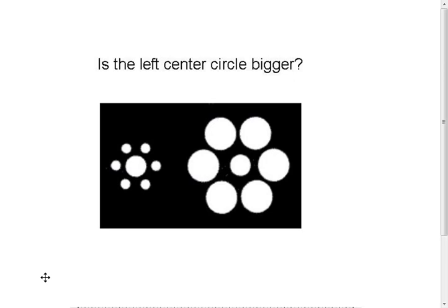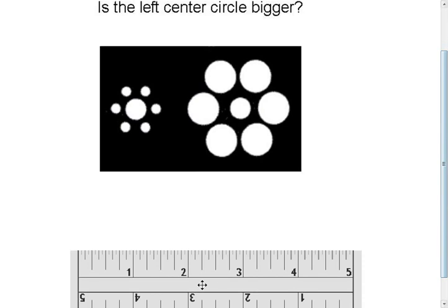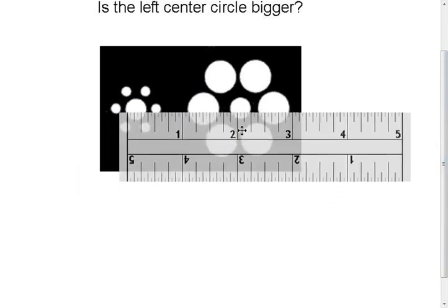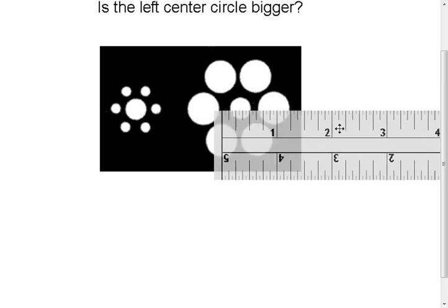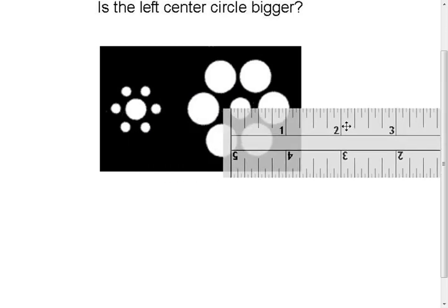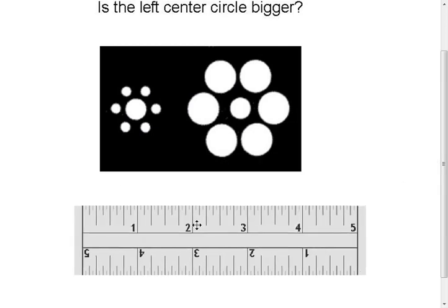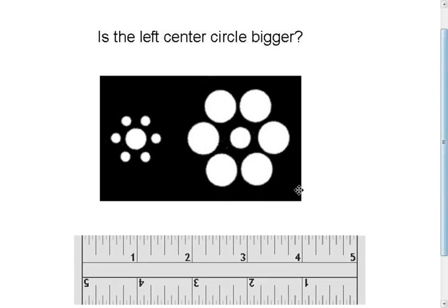In this one, I want you to take a look at the two inner circles in the two diagrams and try to figure out which one's bigger. When you actually look at this, you'll notice that the circle on the left is approximately 3 eighths inches long according to my ruler, and this one is approximately 3 eighths as well. So they're actually equal in size, even though they look like they're different.